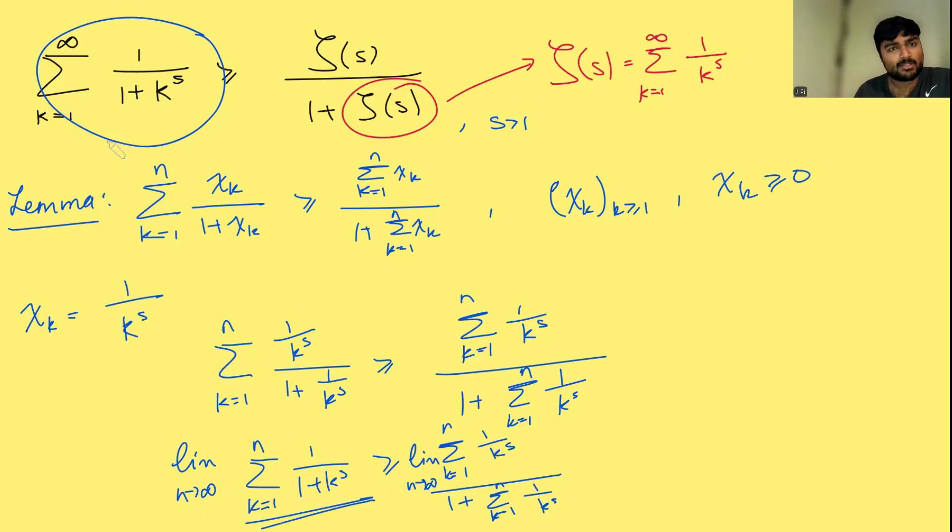And now this thing here is precisely what we want in the limit as n goes to infinity. And this right-hand side here, we're precisely using the definition of zeta of s. So this will be zeta of s over 1 plus zeta of s.